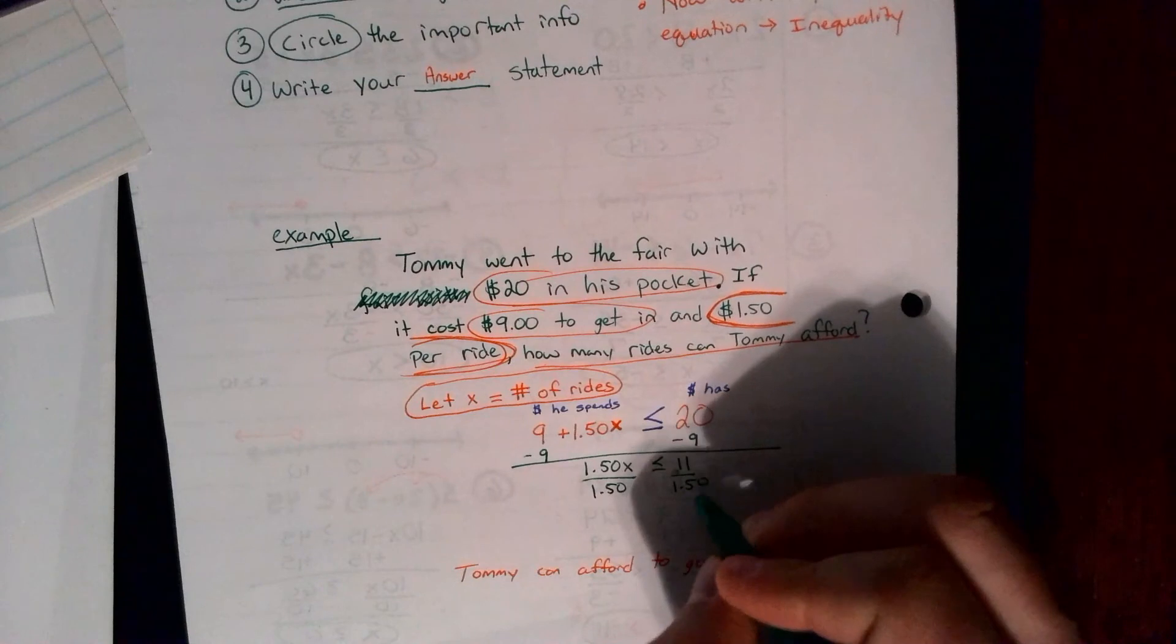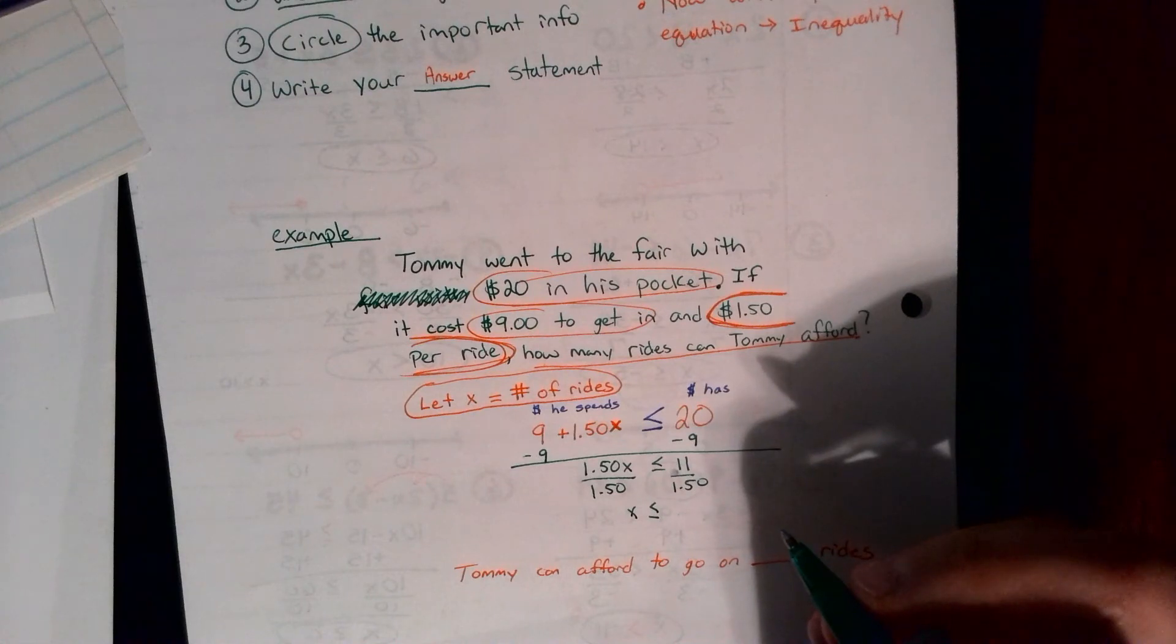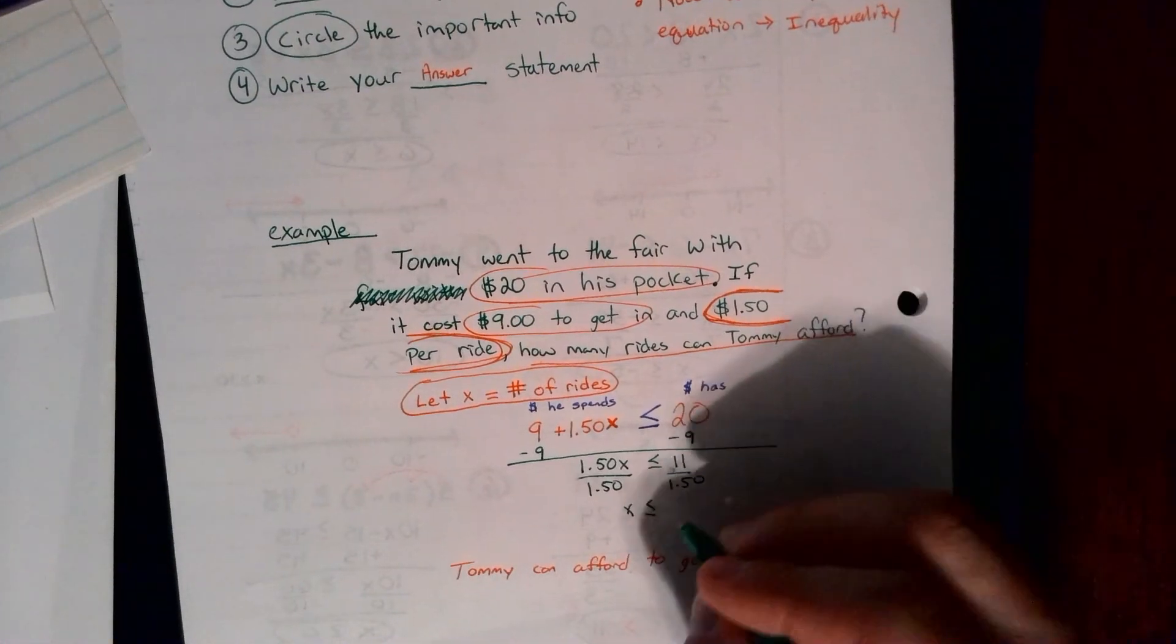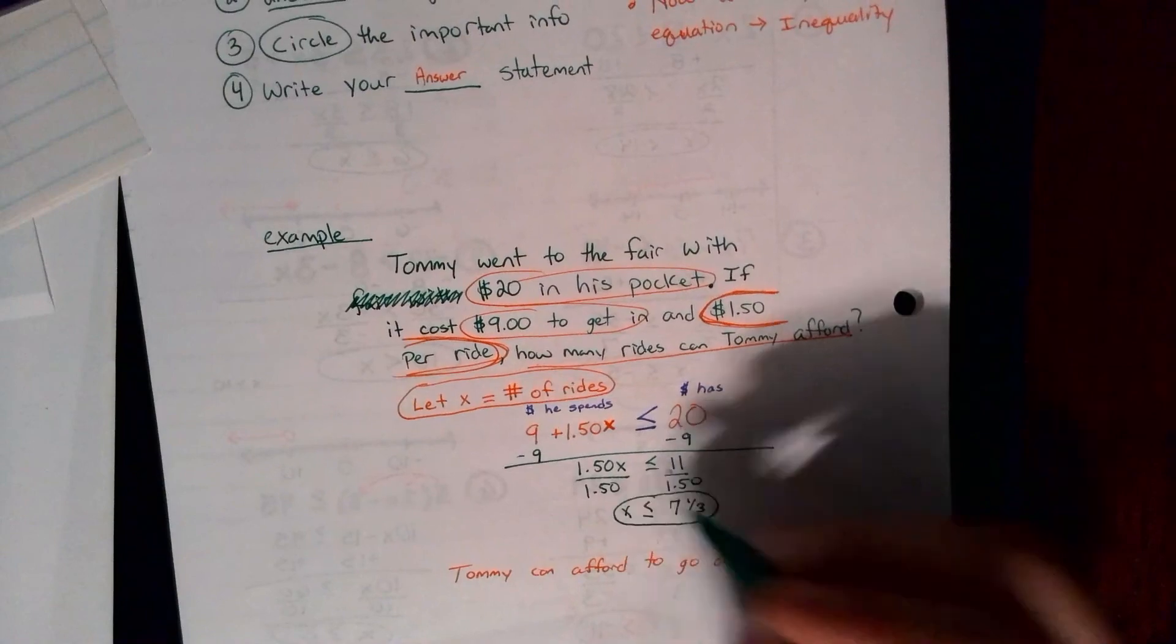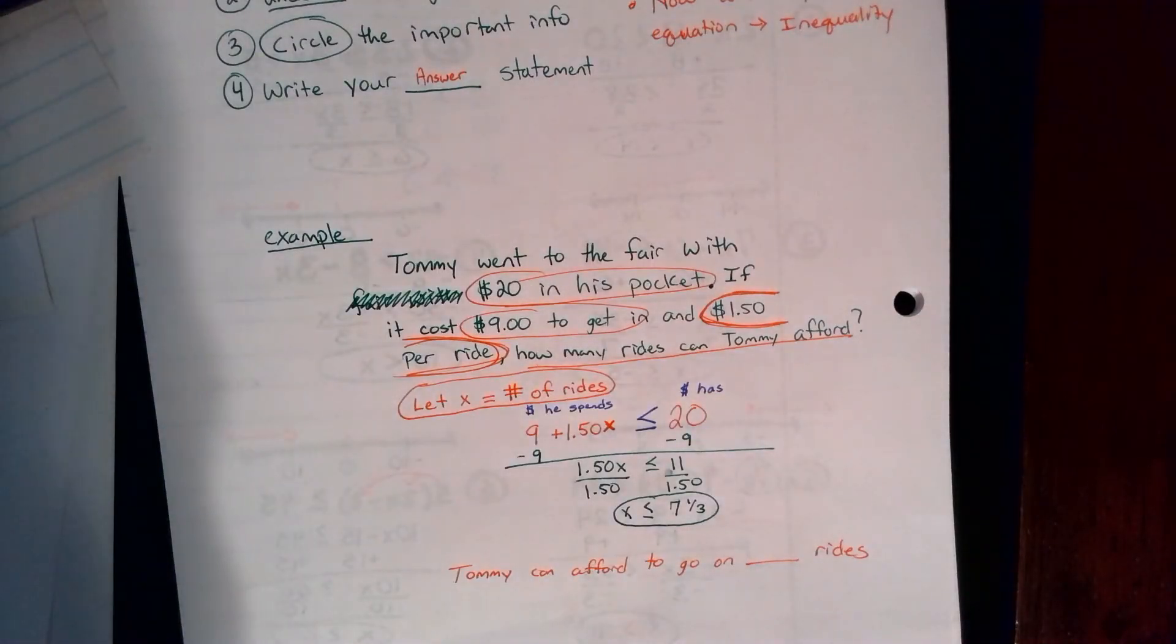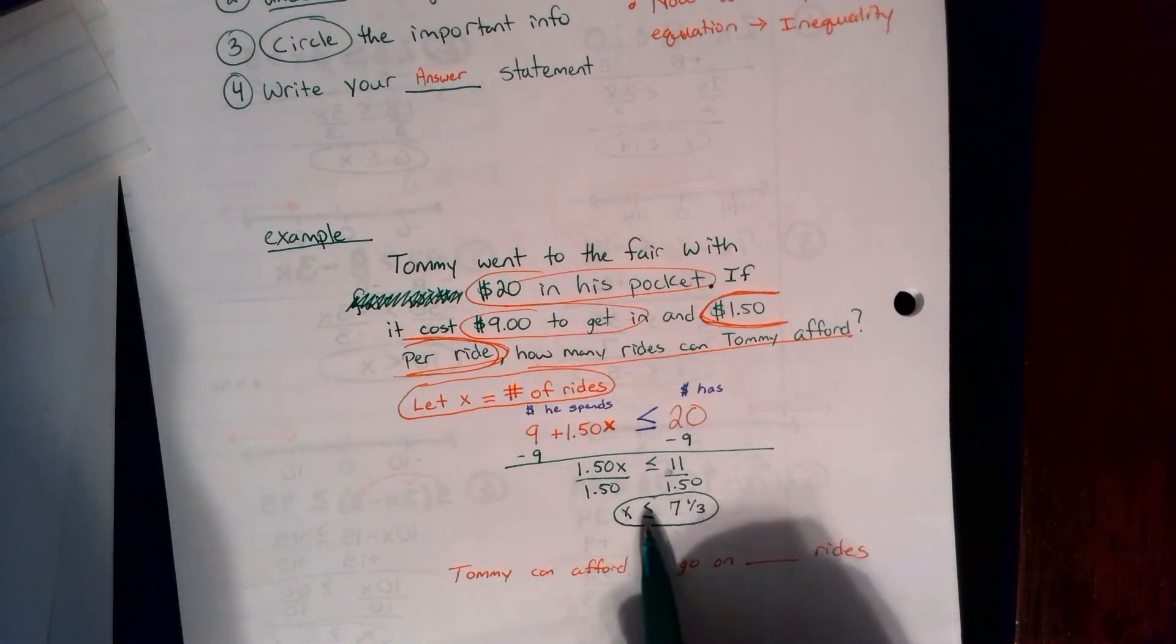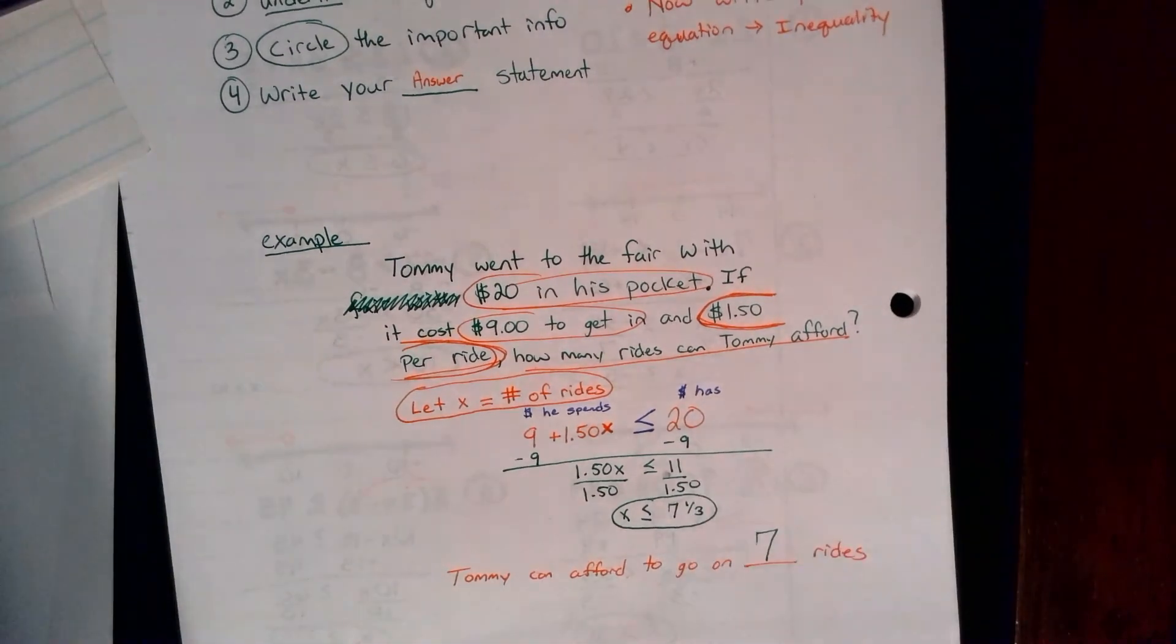And just get out a calculator and type that in and you end up getting that 11 divided by $1.50 is 7 and a third or 7.3 repeating. Now, can you go to the fair and go on a third of a ride? No. So, it says the number of rides is less than or equal to 7 and a third rides. Since you can't go on a third of a ride, the first number that would work would be 7. You can go on 7 or less rides so you can afford up to 7 rides to go on. So, that's your answer.